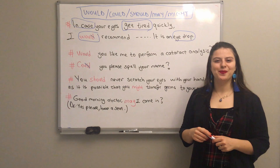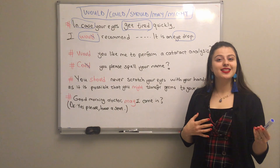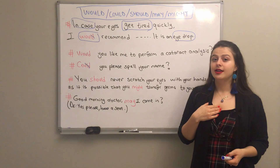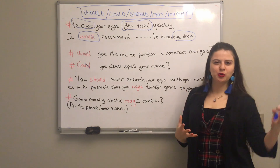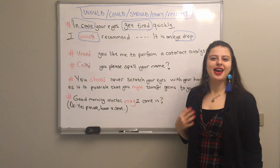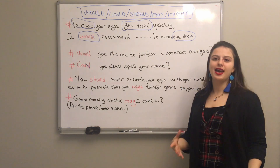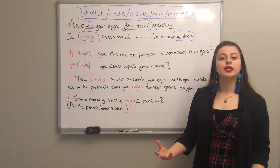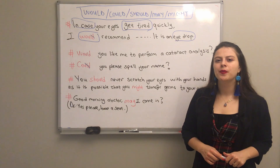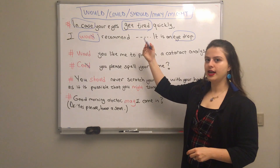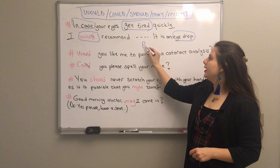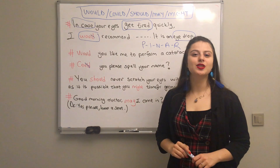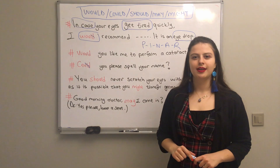'Spelling' means telling the letters in your name. For example, my name is Pınar. If someone doesn't understand my name, they can ask: 'Could you please spell your name?' And I would say the letters: P-I-N-A-R. So 'could' is used here to politely ask someone to do something.